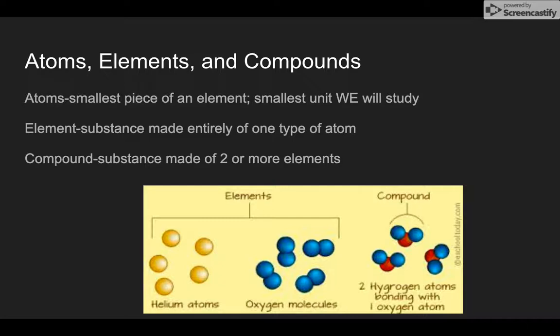So an element is made up entirely of only one type of atom. For example, gold is made up all of atoms of gold, or oxygen is made up of all oxygen atoms. So atoms, those are the smallest thing, the smallest unit that makes up all matter. Elements then are made entirely of one atom.